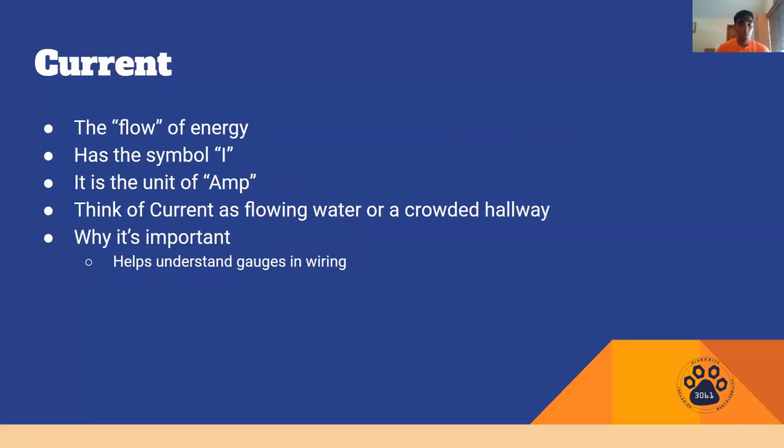The second part that's important to knowing is current. Back to our river parallel, the current is the flow of energy so it would be the flow or the speed of water throughout that river. So voltage is the pressure of that water pushing it down the river and current is the actual speed of that water as it goes down the river. It has the symbol I which is not used in conversation but very important for Ohm's law which we'll learn in a bit, and it has the unit of amp. With amperage you can sometimes refer to the measure of an object's current as its amperage.